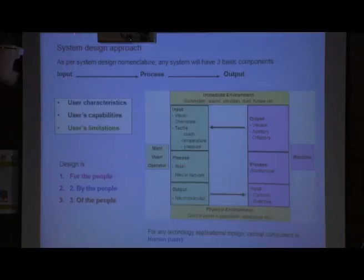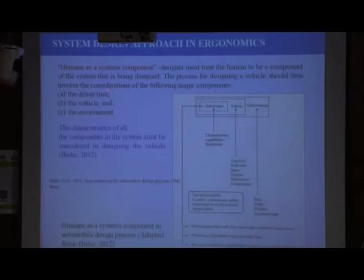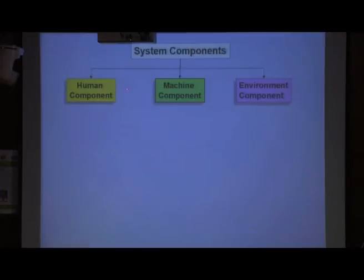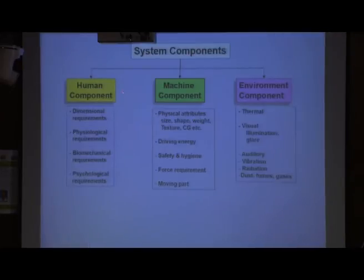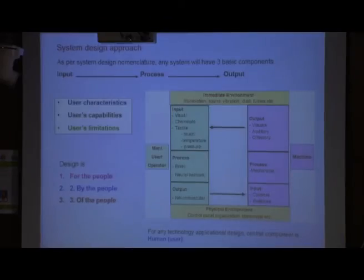Regarding the system design approach: human is the prime system component, because whatever we are designing and developing is for human — developed by the people, for the people, and of the people. The design process must consider all three factors: human, machine, and environment.